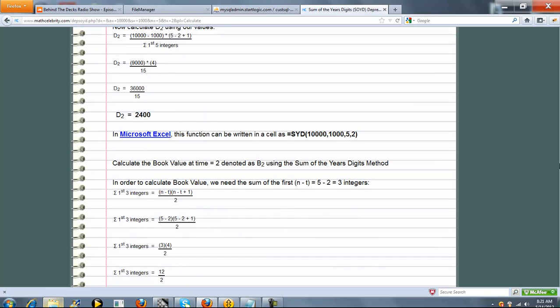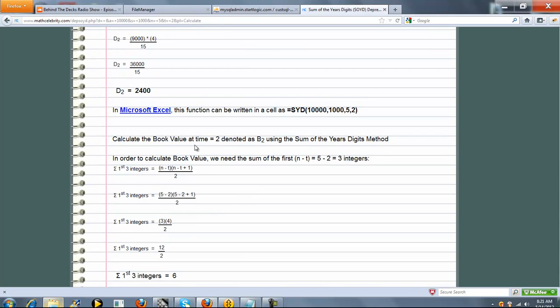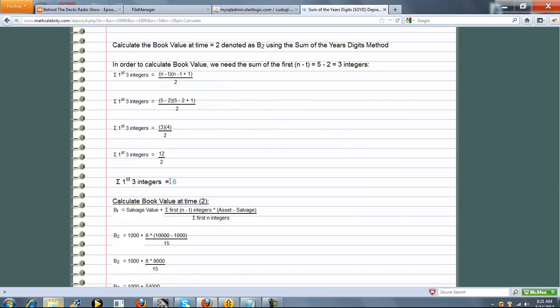Next, we're going to calculate the book value at time 2. This is the formula here. We go ahead and plug in our numbers, and we get the sum of the first three integers at 6.